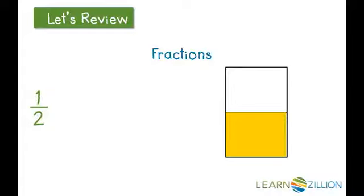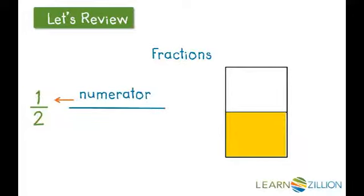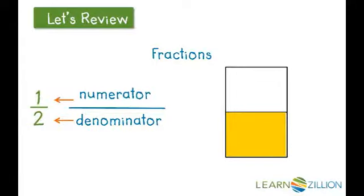When we look at a fraction, the numerator tells us the part that we're thinking of — in this case, one. The denominator tells us the number of total parts in the whole — in this case, we have a total of two equal parts in the whole.